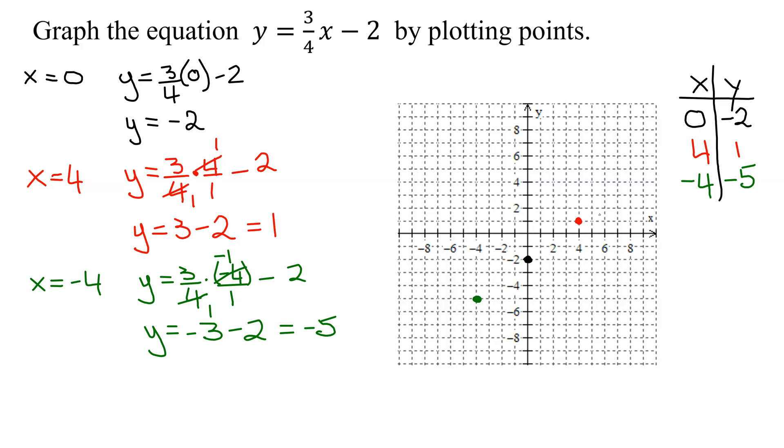So let's draw my line and see if I can get it going through all my points. And there we go. And then I can put arrows on both ends. And so here is the graph of y equals three-quarters x minus 2.